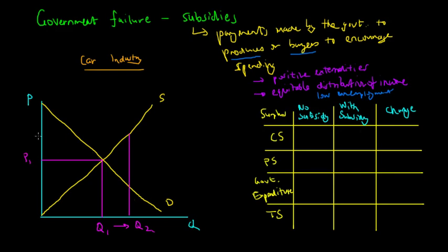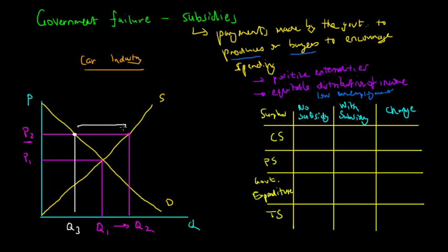They want to actually increase production. But if producers want to produce at Q2, the price of the cars must be at P2. Without the subsidy, demand would only be at Q3 at that price. So we can see that there would be a surplus in supply — even though producers are producing more at this price, they're not actually selling everything, and so it would be a waste of resources.